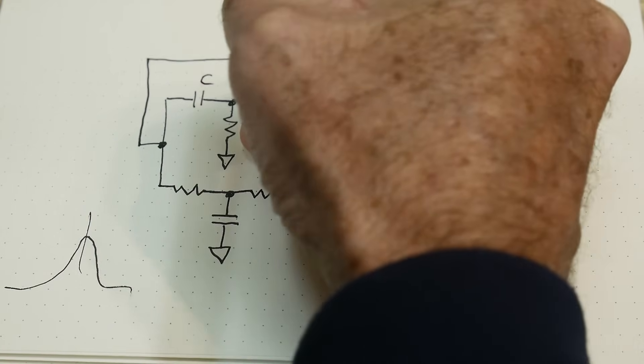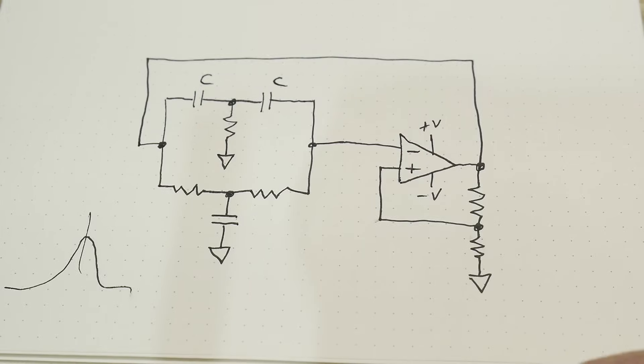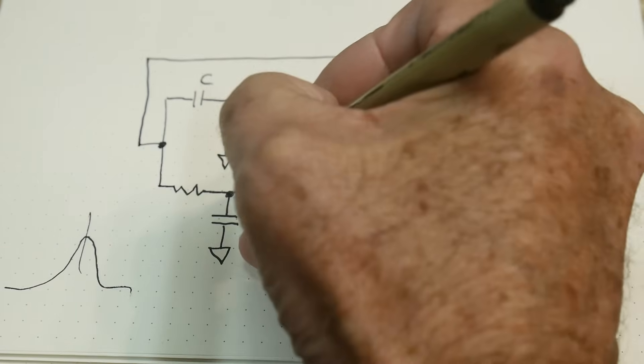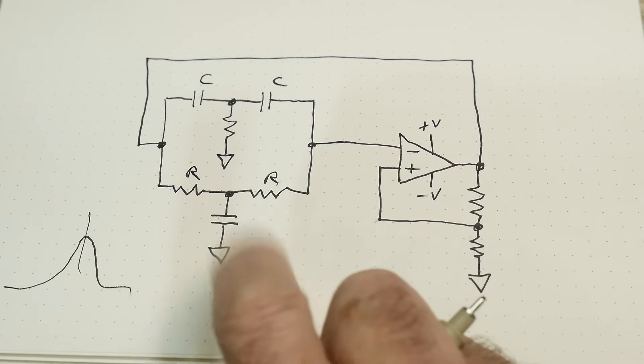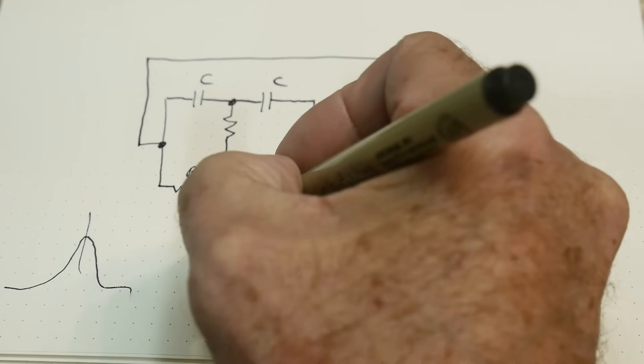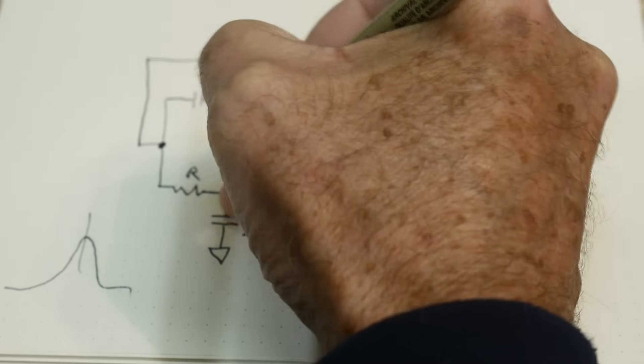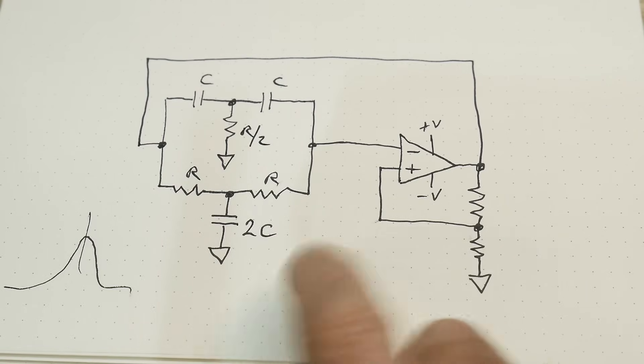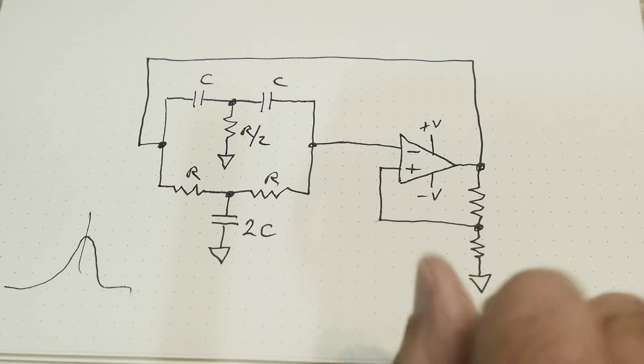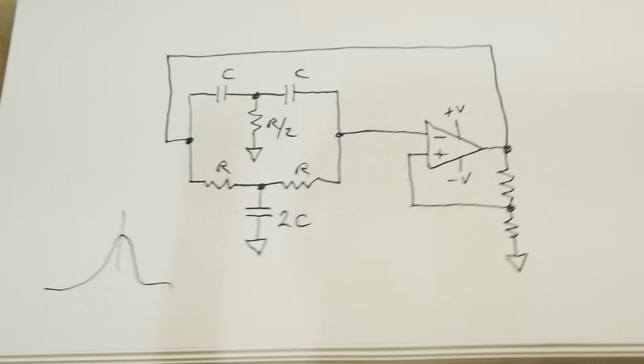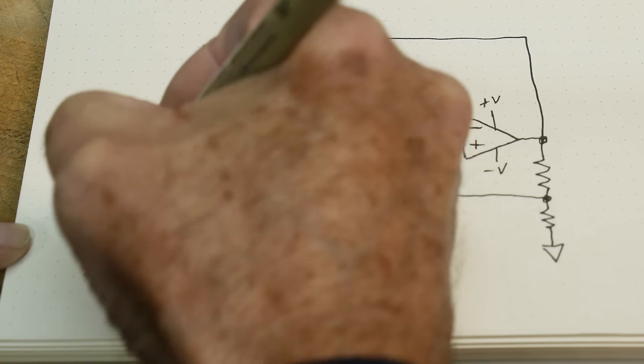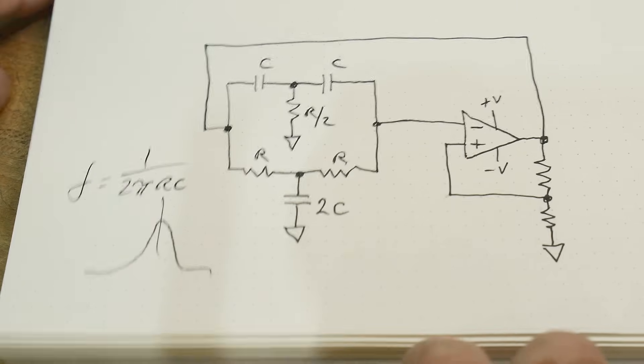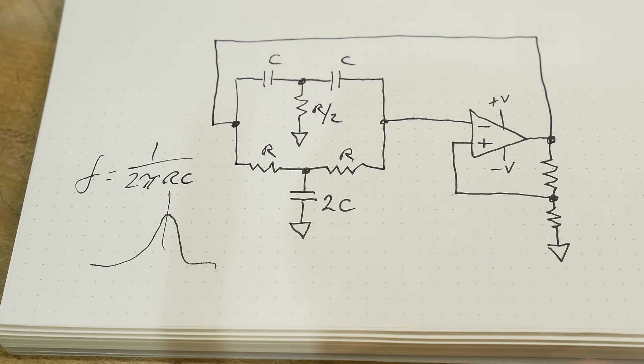So let's go ahead and take a look at this. We'll say this is C and this is C and this is R and this is R. Well in order to make this work right, we're going to make this 2C and we're going to make this R over 2. That's the way this thing works. So it's real simple to figure it out. And then the frequency is going to be 1 over 2πRC. Isn't that amazing?